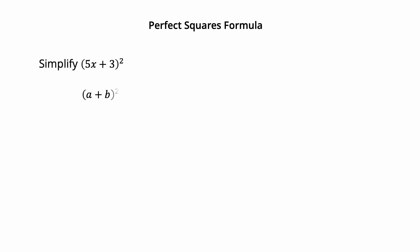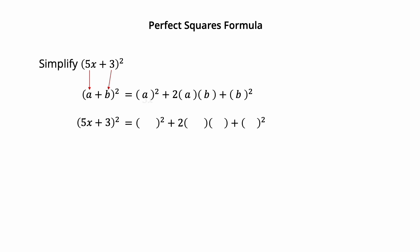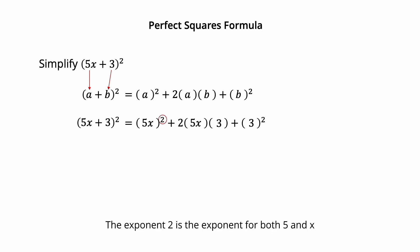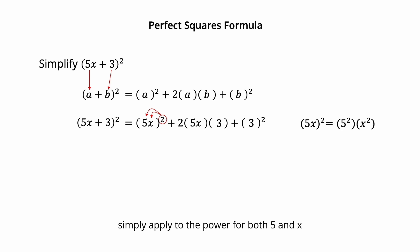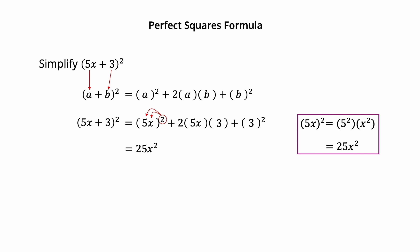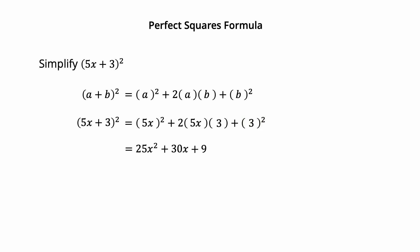Find the square of 5x plus 3 using the perfect square formula: (a plus b) squared equals a squared plus 2ab plus b squared. Here 5x is a and 3 is b. The exponent 2 applies to both 5 and x, so 5x squared simplifies to 25x squared. 2 times 5x times 3 equals 30x. 3 times 3 equals 9. Therefore, the square of 5x plus 3 is 25x squared plus 30x plus 9.